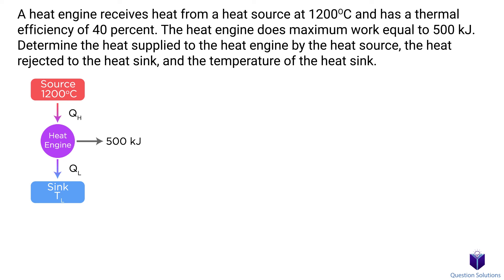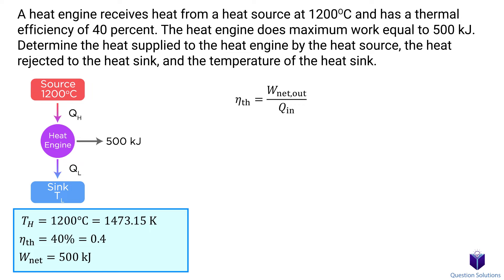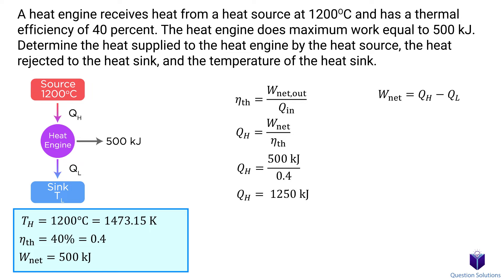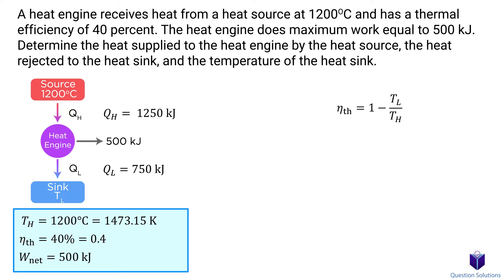In the third problem, a heat engine does maximum work equal to 500 kilojoules. We need to find the heat supplied, heat rejected, and the temperature of the heat sink. The engine receives heat from a source at 1200 degrees Celsius and has an efficiency of 40 percent. Using the efficiency equation, we find QH (the heat supplied). Then using W-net = QH − QL, we solve for QL (the heat rejected). Finally, using the Carnot relation QL/QH = TL/TH, we solve for TL, the temperature of the heat sink.